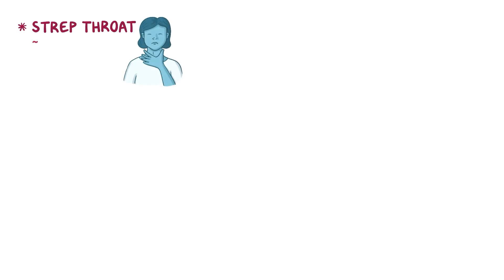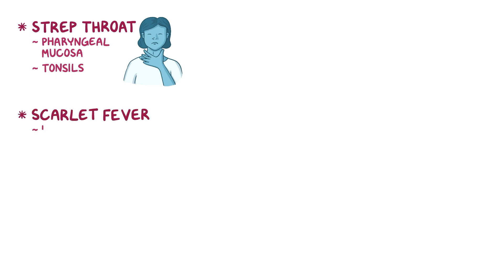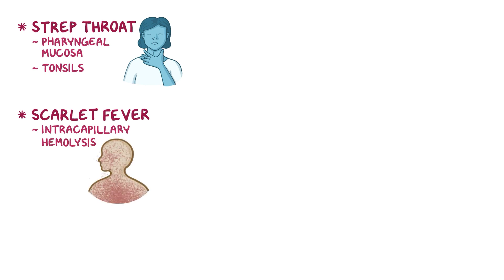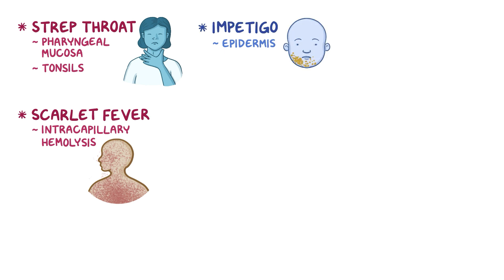Most often, strep pyogenes causes strep pharyngitis, also called strep throat, which is the inflammation of the pharyngeal mucosa and tonsils. Strep pharyngitis might also be associated with scarlet fever, which is when intracapillary hemolysis results in a bright red skin rash. When strep pyogenes infects the epidermis, it causes impetigo, which are superficial skin lesions that look like honey clusters.